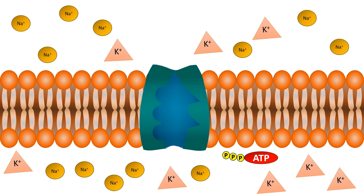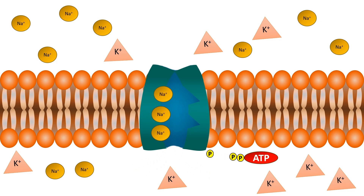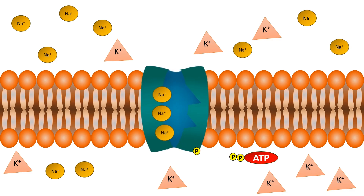Next, ATP is hydrolyzed, releasing energy and causing the pump to change shape, moving the sodium ions out of the cell.